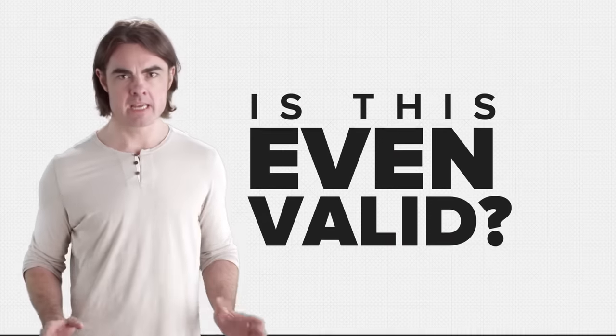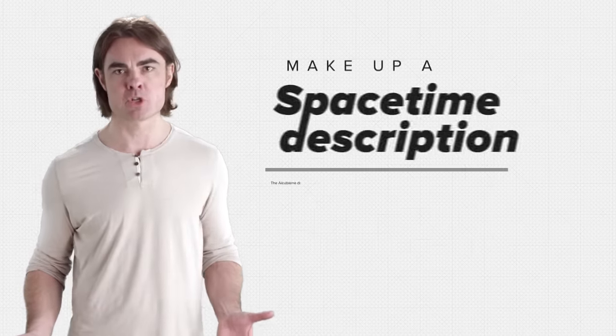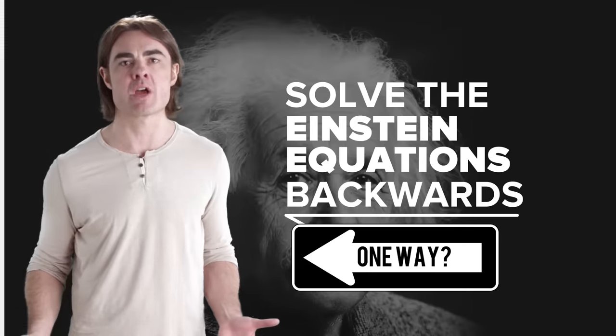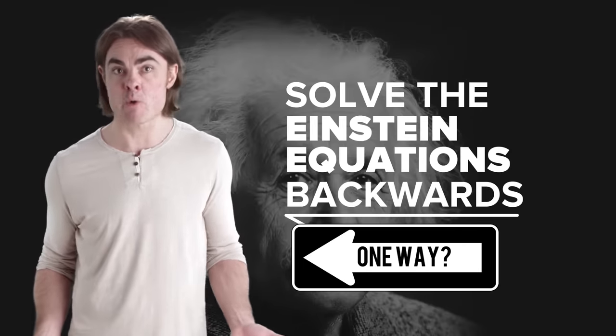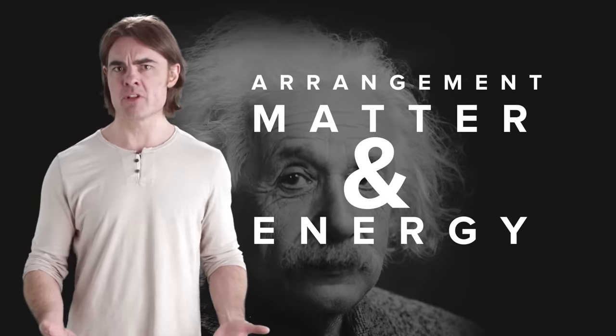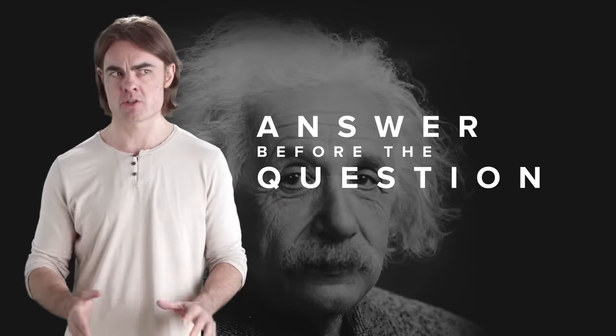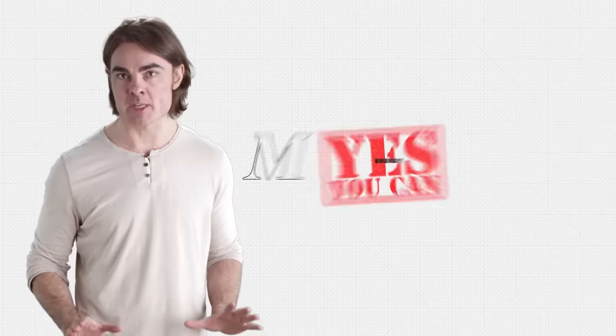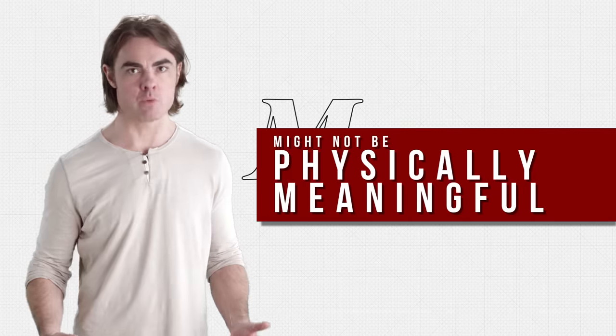But is this even valid? Can you just make up a spacetime description and then essentially solve the Einstein equations backwards to figure out what arrangement of matter and energy would be needed to create it? It's sort of like giving the answer before you have the question. So 42. Yeah, sure you can do this. There's just no guarantee that the resulting mass energy distribution will be physically meaningful.